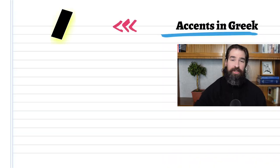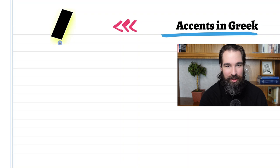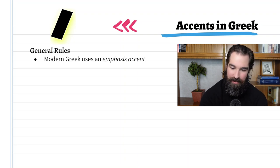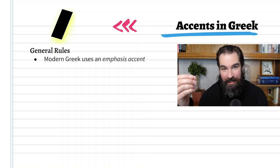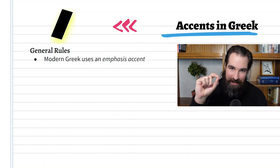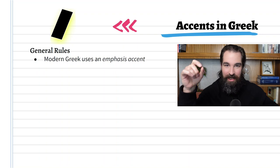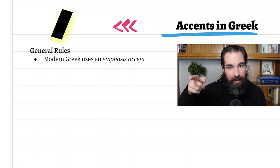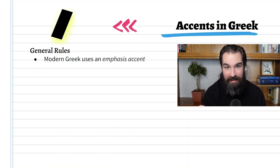Accents in Greek. In Greek, you're going to notice over the words a little line — that is the accent in Greek. There are some general rules for the accent. First of all, it's an emphasis accent. An emphasis accent means this is an accent mark that when you see it, you increase your volume when you're saying whatever it sits over. If it's sitting over an omicron, for example, you're going to hit that omicron with more volume. That's an emphasis accent.